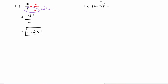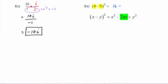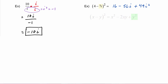Here we have to square the binomial (4 - 7i). Using our rule from algebra, we square the first: 16, minus we double the product — 2 times 4 is 8 times 7i is 56i — plus we square the second: 49i². We know that plus 49i² becomes minus 49, so this is 16 minus 49, which is negative 33 minus 56i.